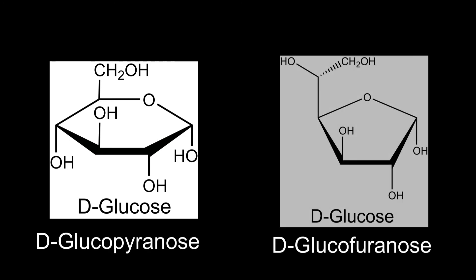In the undissolved state monosaccharides with at least 5 carbon atoms are present in the cyclic form, where two forms called pyranose and furanose can be present. Depending on the hydroxy group which reacts in the formation of the hemiacetal, the ring can consist of 5 or 6 atoms.